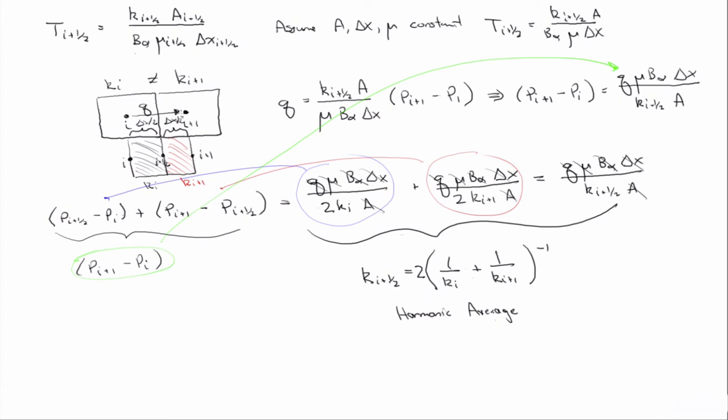That has an advantage over just using the regular arithmetic mean, which would be just the average of the two grid blocks. Let's write it out. If we assume the arithmetic mean, then we'd have just the average, k i plus k i plus 1 over 2.